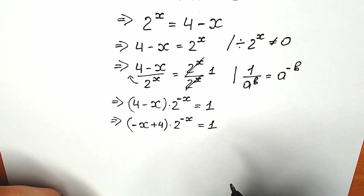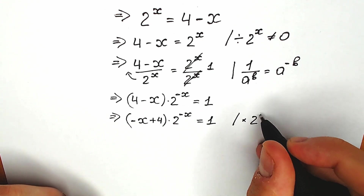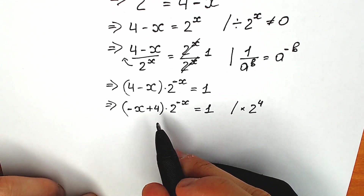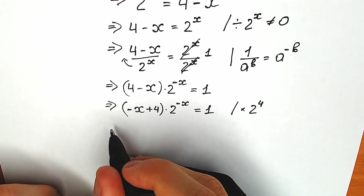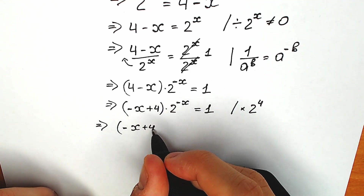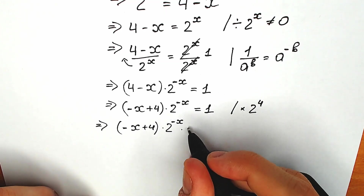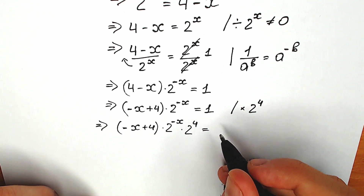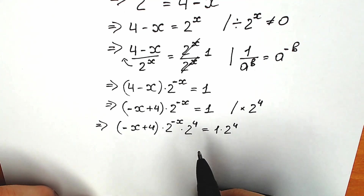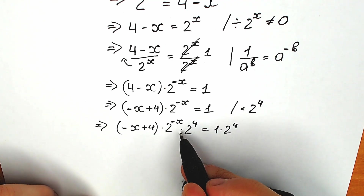What we're going to do next is multiply both sides by 2 to the power 4. I'm going to write this 2 to the power 4 in the third position, after 2 to the power minus x. So we have minus x plus 4 times 2 to the power minus x times 2 to the power 4, and on the right side 1 times 2 to the power 4. Now look at this expression: 2 to the power minus x times 2 to the power 4 — we have the same base with multiplication but different powers.